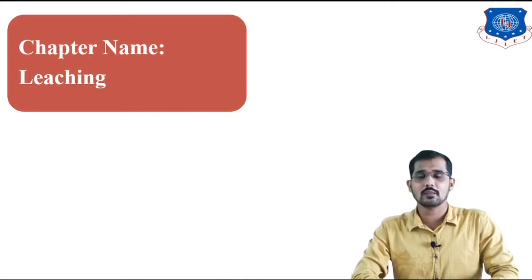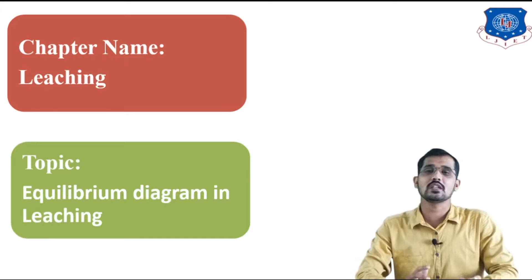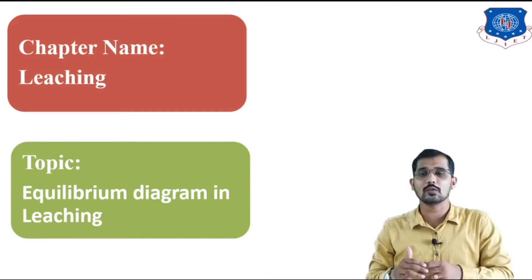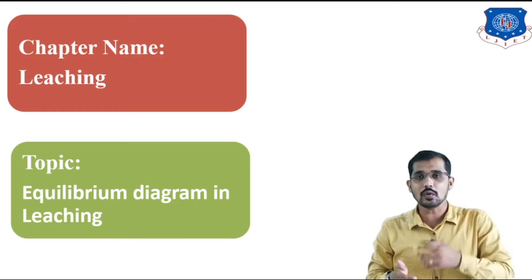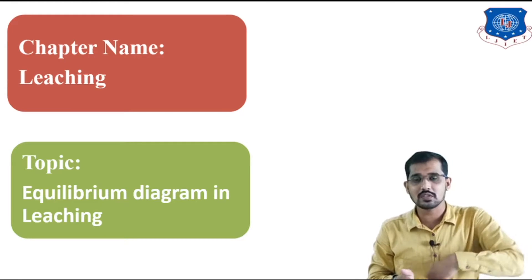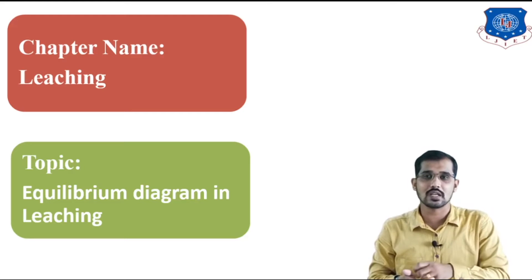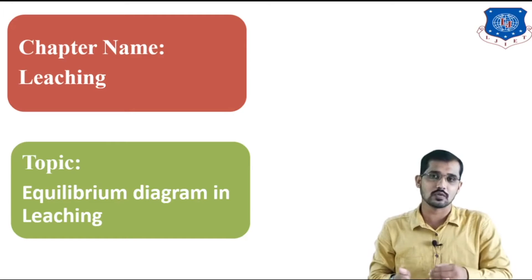The chapter name is leaching and the topic is equilibrium diagram in leaching. In the last lecture, I told you about the basic concepts of leaching. Leaching means if you want to extract some constituents from the solid by using liquid, that process is known as leaching, where we are getting two streams — the overflow stream and the underflow stream.